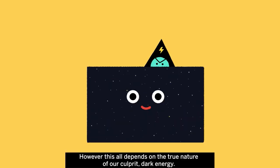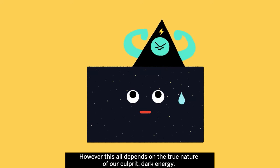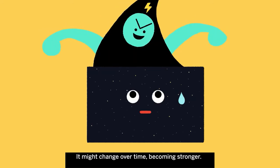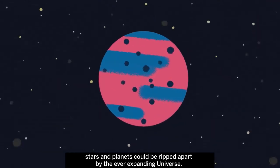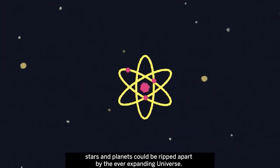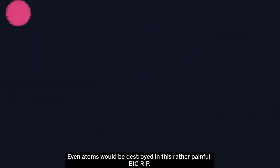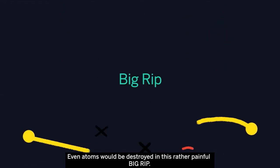However, this all depends on the true nature of our culprit, dark energy. It might change over time, becoming stronger. Billions of years into the future, stars and planets could be ripped apart by the ever-expanding universe. Even atoms would be destroyed in this rather painful big rip.